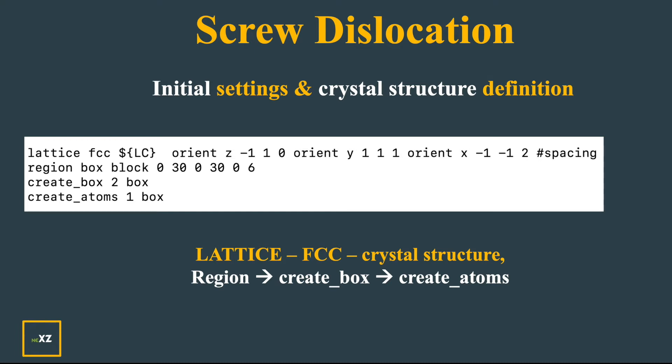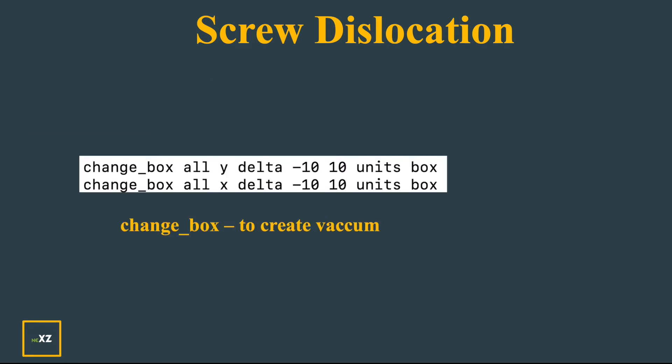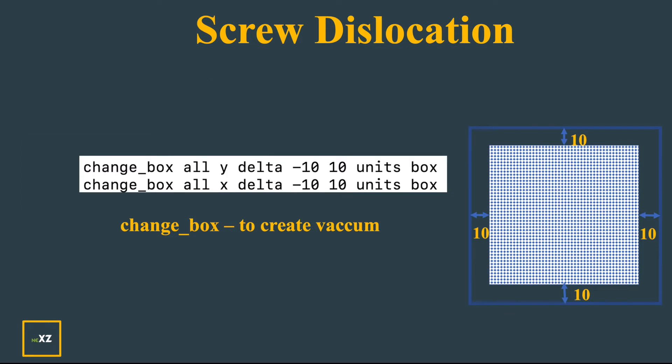Then I create the region or box, then I create the box with two atom types, and then I create the atoms for only one atom type. I change the box dimensions in x and y so that I can create vacuum. You can do it in different ways, but this is how I did it.